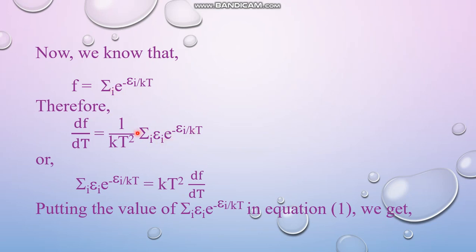Now if this equation is rearranged then this summation part can be taken to the left hand side and in the right hand side you can get the expression kT squared dF by dT.